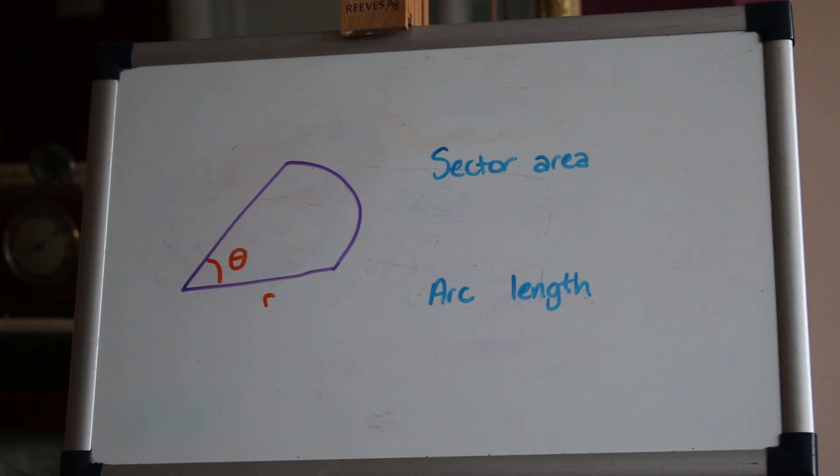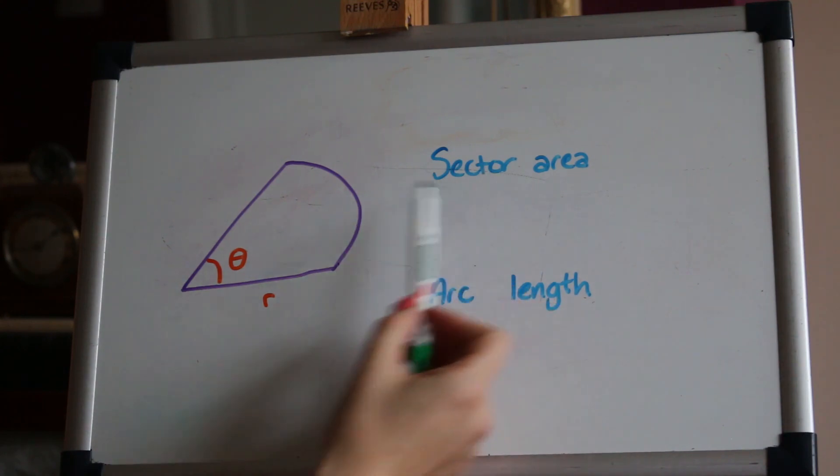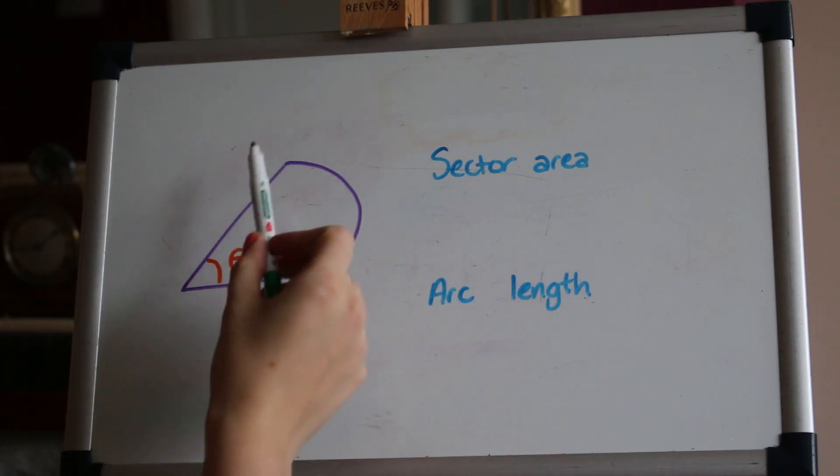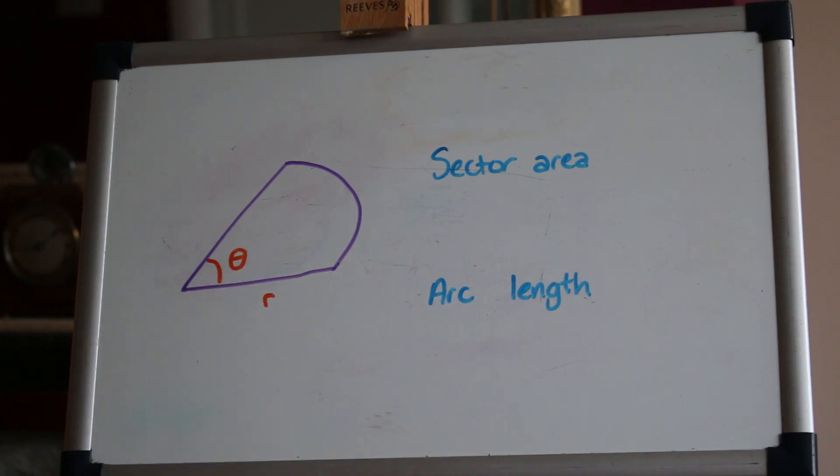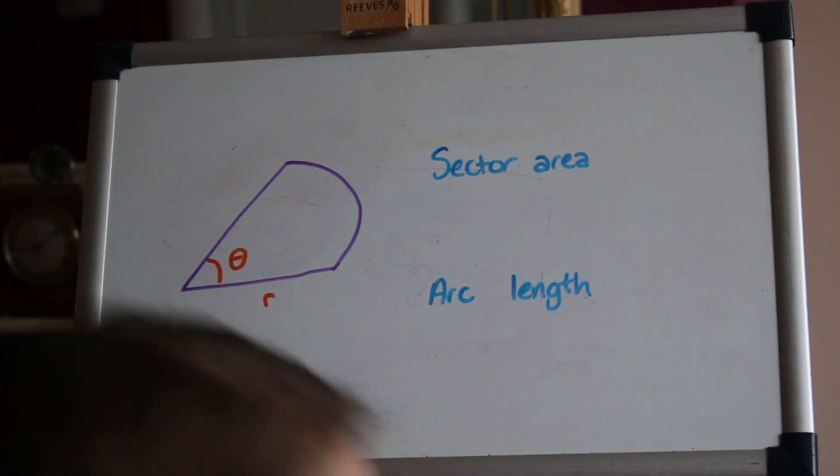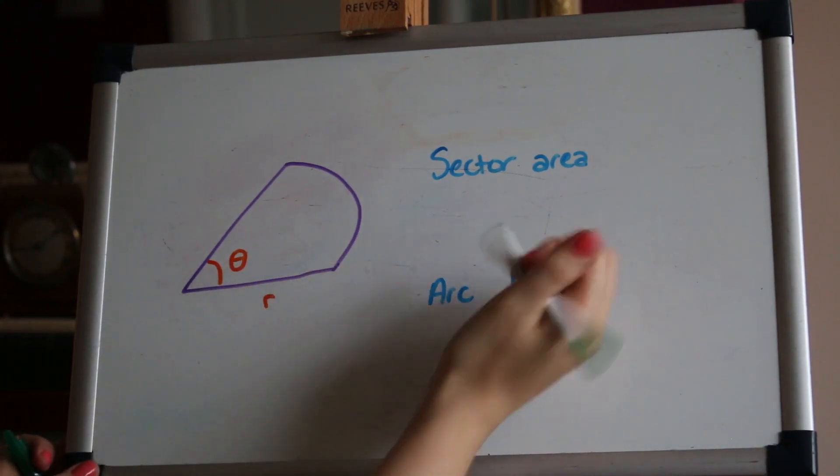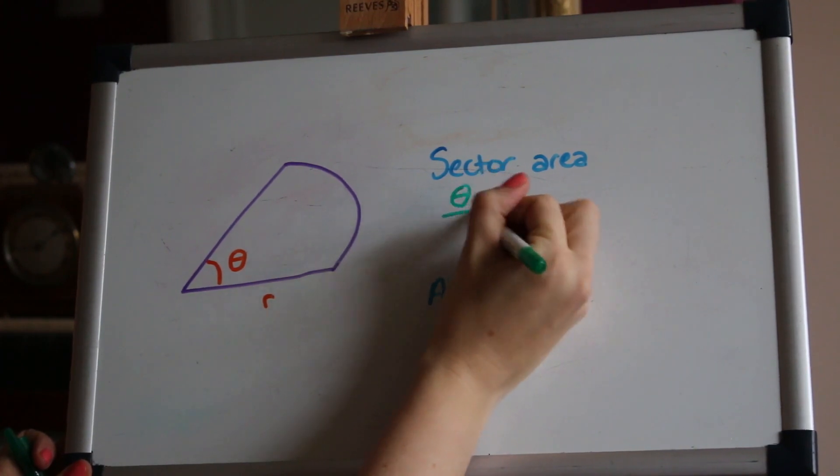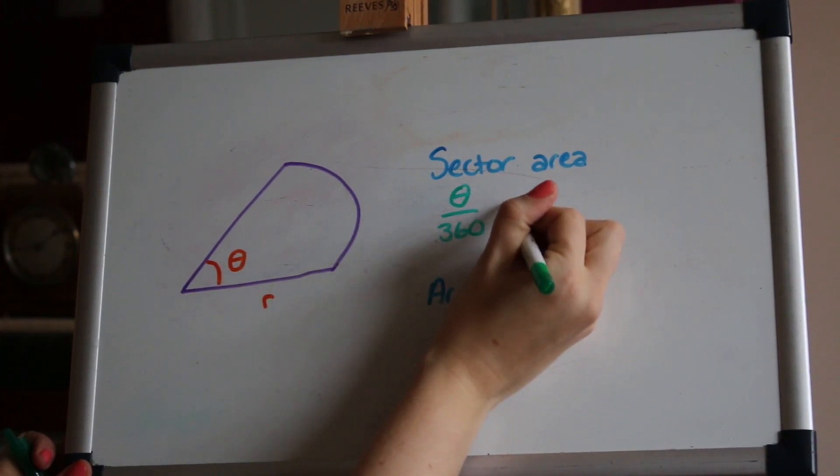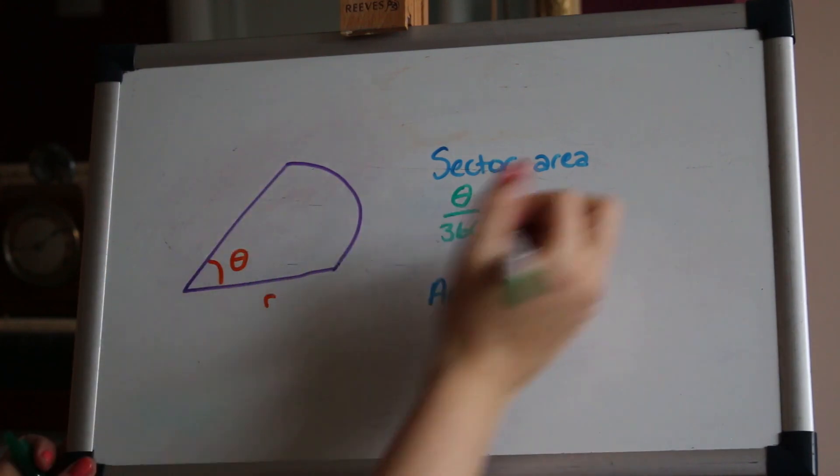They're actually incredibly useful for lots of things including working out a sector area and arc length. And I'm going to show you how the formulas really simplify down if we're using radians. So at GCSE you will have seen how to find a sector area. You get the area of the full circle and then times it by the fraction of the circle that you want. So if we put the angle that's at the centre of the sector, in this case θ, and divide by 360, that gives us the fraction of the circle, and then the full area of the circle is πr².